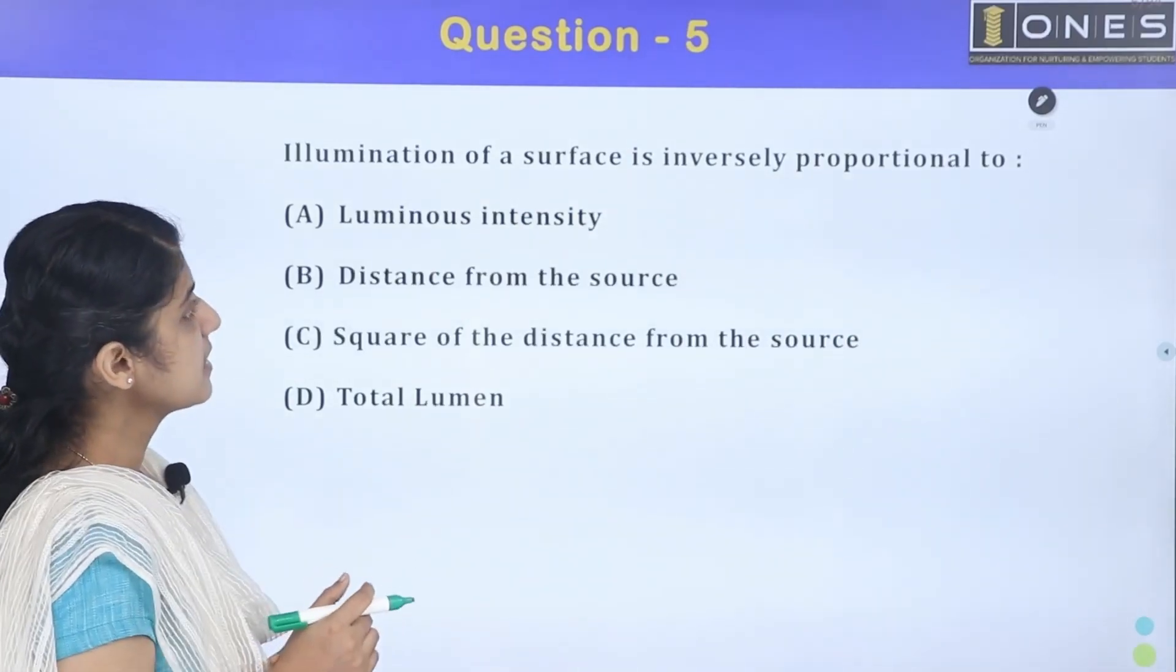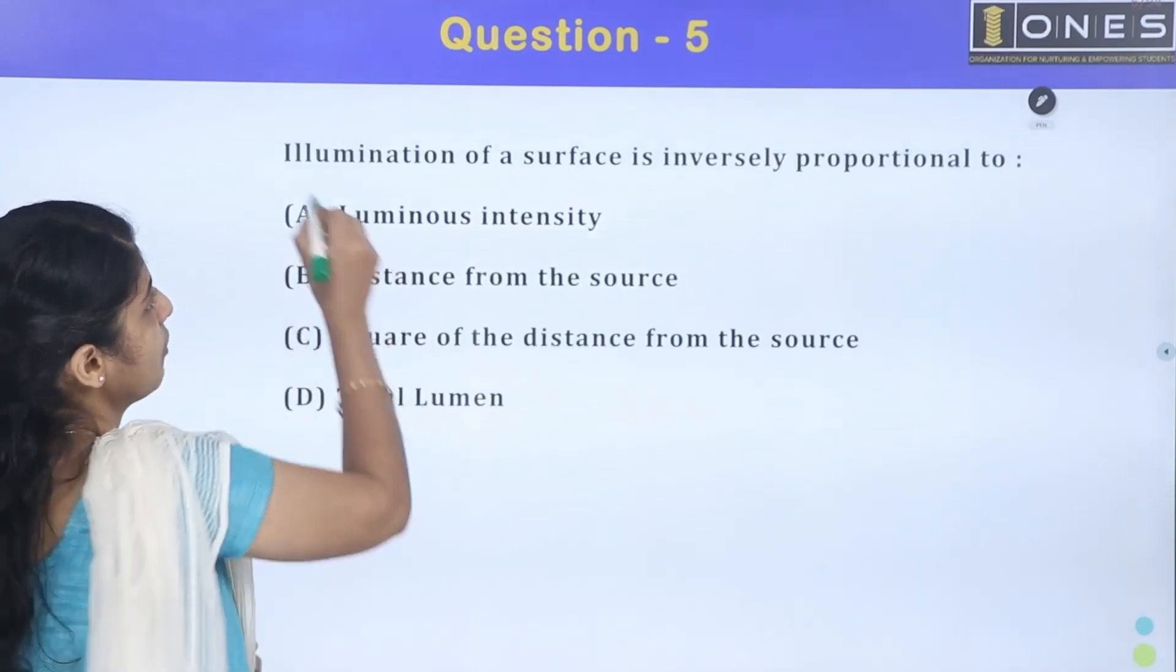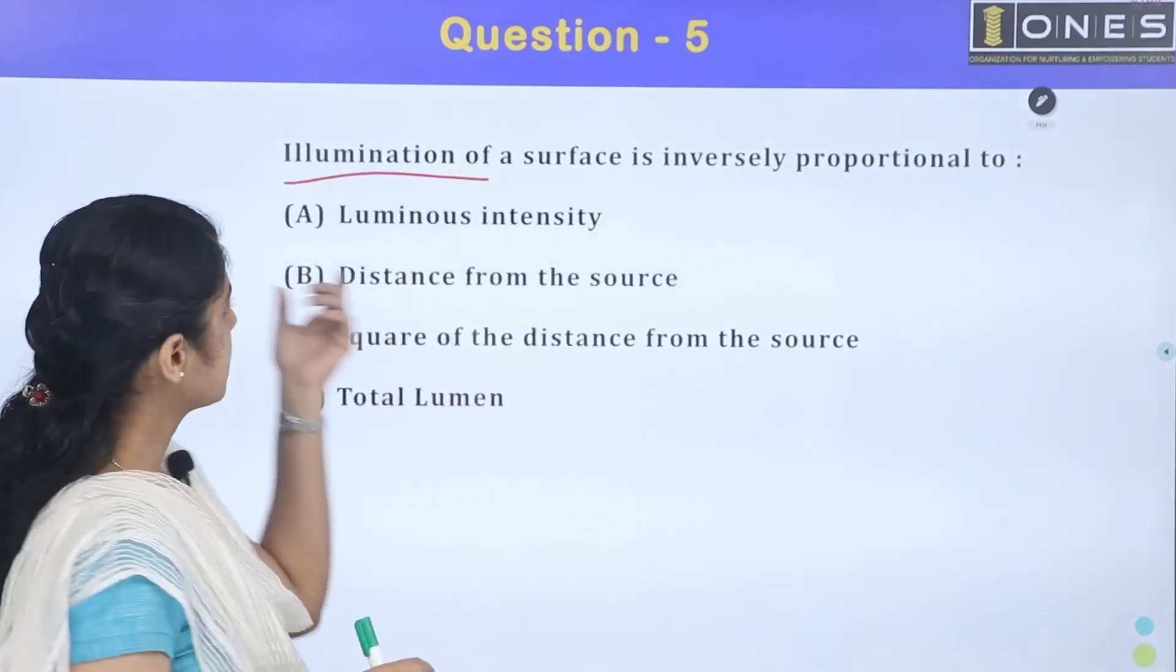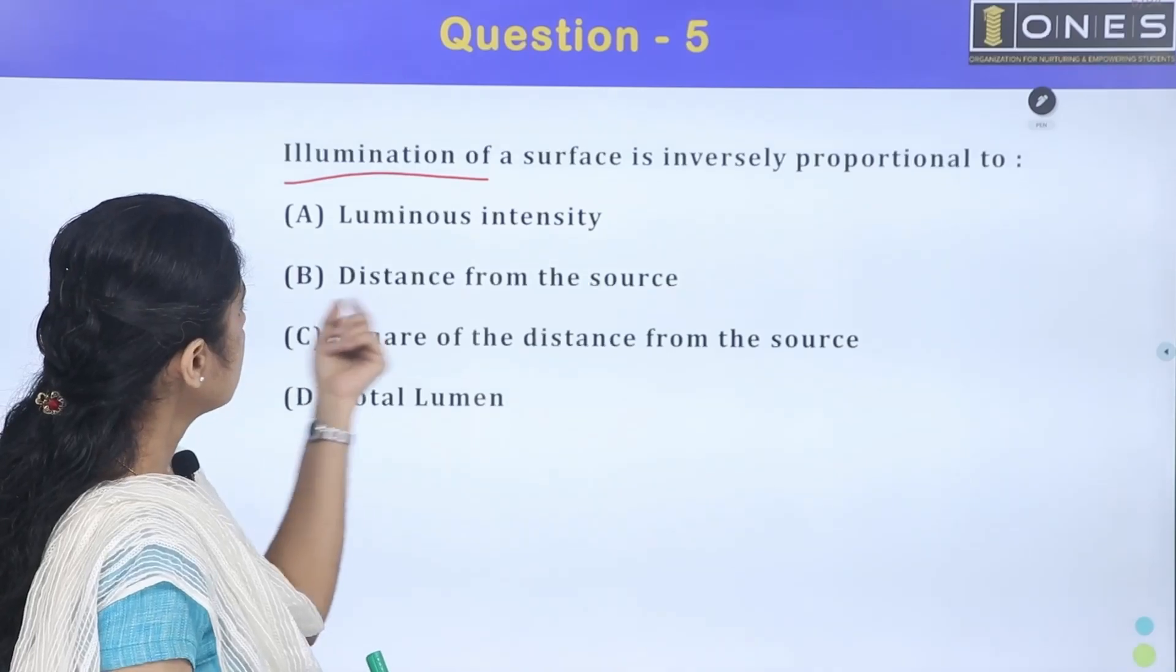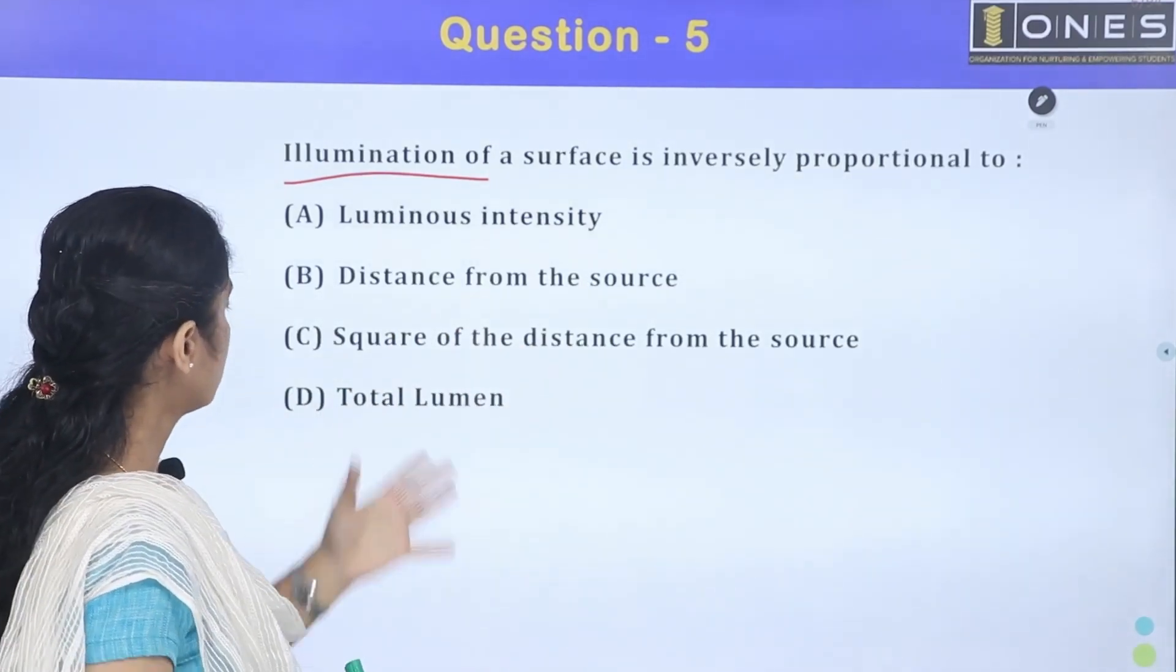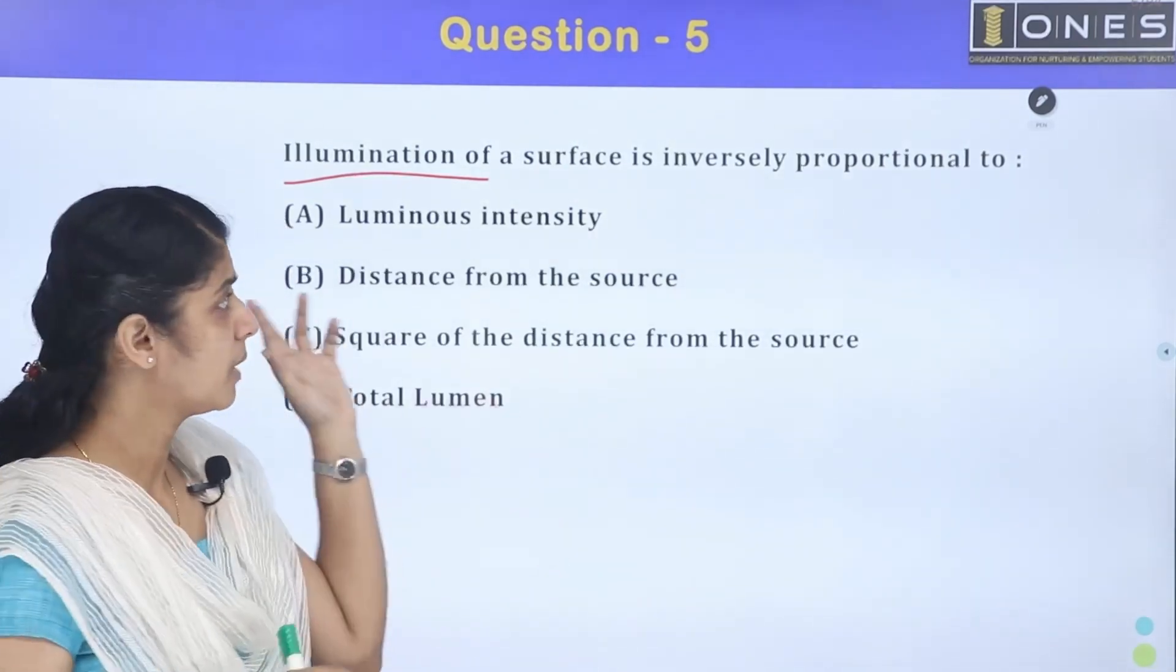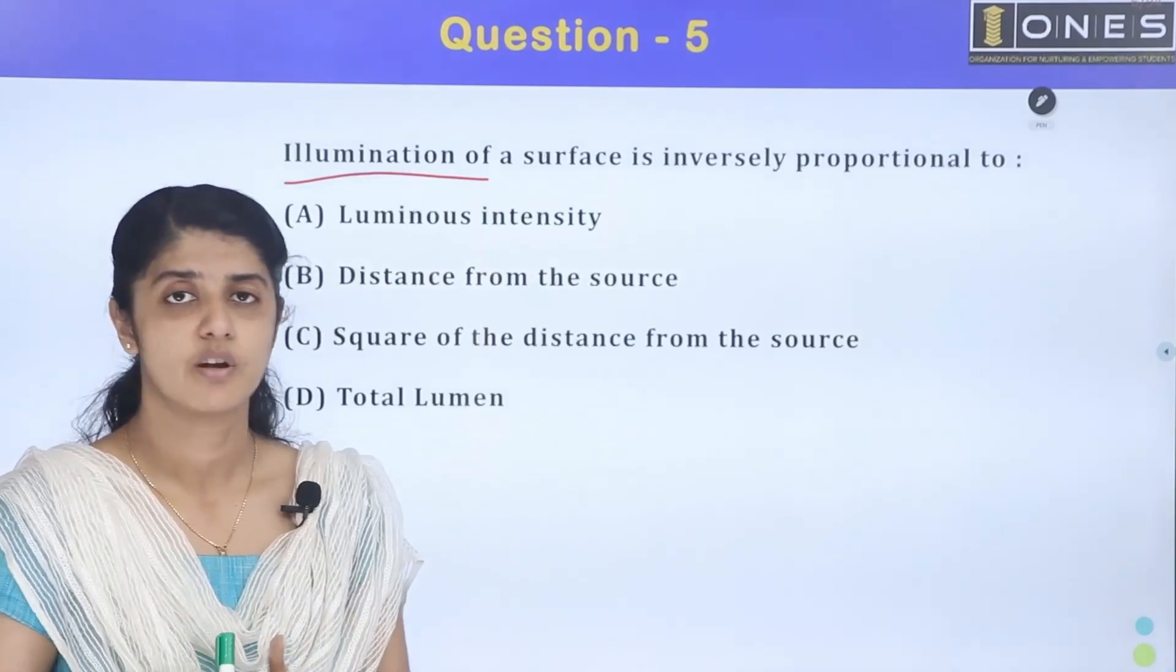Next question: Illumination of the surface is inversely proportional to what? Options are luminous intensity, distance from source, square of distance from source, or total lumen. This relates to Lambert's law.